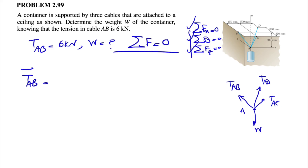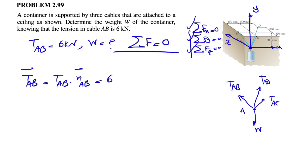TAB is equal to the magnitude times the unit vector of AB. From the question we know the magnitude is 6 kilonewtons, and we have to find the unit vector AB. Since we have our XYZ axis in the question — Y, X, and Z — point A is our origin, so we call A (0,0,0). All we need to do is find the coordinates of points B, C, and D. Since A is the origin, AB equals the coordinates of B, AC equals coordinates of C, and AD equals coordinates of D.